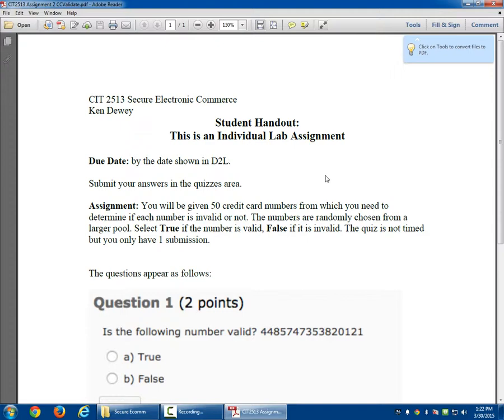So what we did was I came up with 100 credit card numbers. That's actually 102 by the way. There's 51 valid and 51 not valid. But out of that group of 102, it's going to select 50 for each of you randomly.